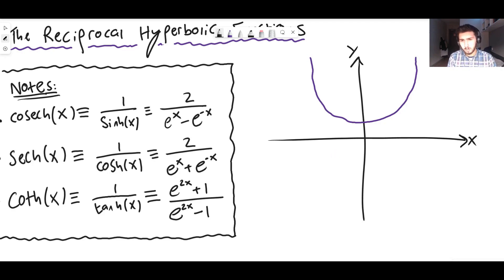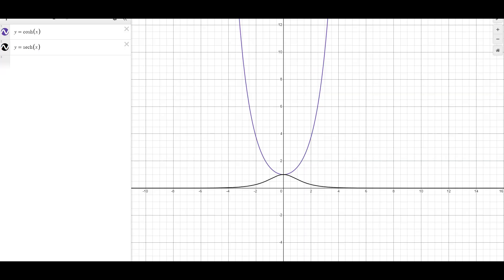So sech is the reciprocal of that. It looks something like this. Again it's not a very good drawing so I will chuck it up on Desmos right now so you can see it. It goes through the point zero one on the y-axis and it is just the reciprocal of cosh. Amazing.